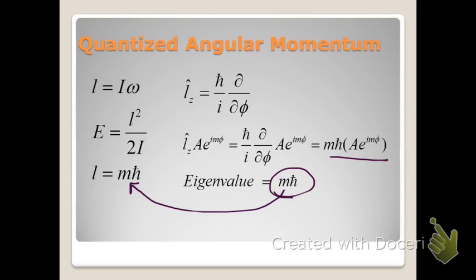This is consistent with our original specification that L equals m h-bar. This is the angular momentum eigenvalue, which is what we will measure in the laboratory.